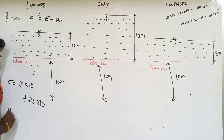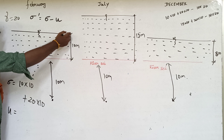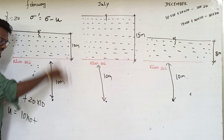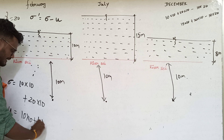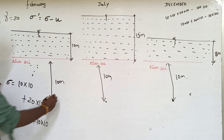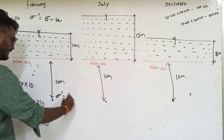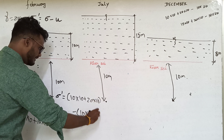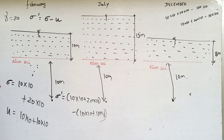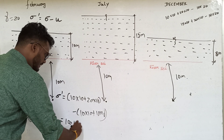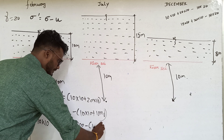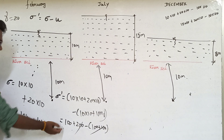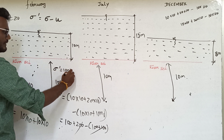Now come to pore water pressure — it is due to water. So pore water pressure equals (10 × 10) + (10 × 10) = 200 kPa. Now substituting: effective stress = total stress minus pore water pressure = 300 − 200 = 100 kN/m². So the effective stress is 100 kPa.